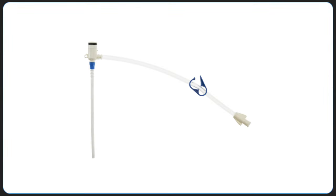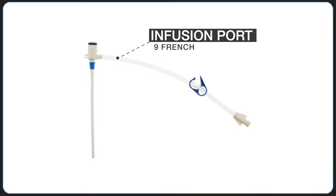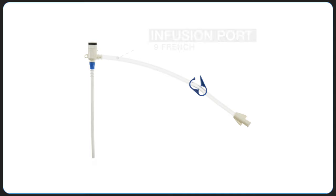A percutaneous sheath introducer or PSI introducer is a device with a single infusion port, a 9-French lumen. As with the MAC introducer, if a catheter is inserted into the introducer, the flow rate is decreased significantly.